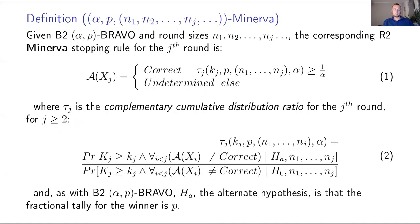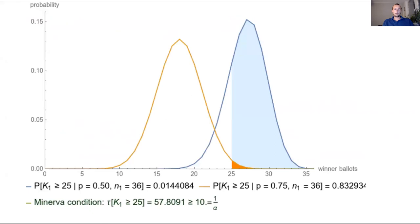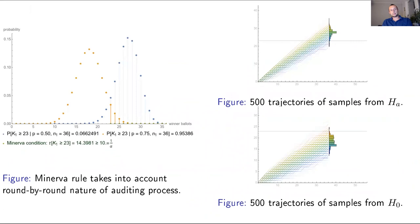So we came up with Minerva, and Minerva takes a slightly different approach, and it doesn't compare the probabilities of being exactly at the given point, but it takes into account, let's say, area that we are at a given point or above. And we also take into account this ratio, so the ratio that, let's say, after sampling 36 ballots, and we have at least 25 for the winner, we compute this probability, and then we divide it by the probability from this distribution. And if this ratio is above the threshold, then we stop the audit, and we are good.